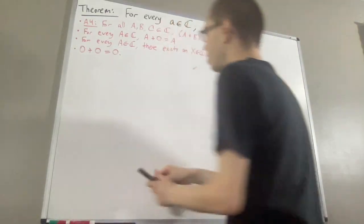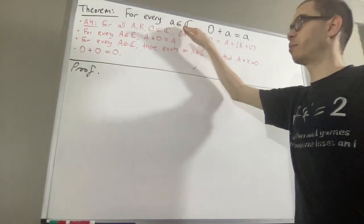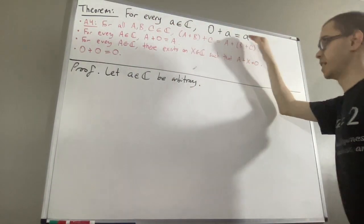Okay, so now let's get into proving this theorem. To start on the proof, let's give ourselves an arbitrary complex number a. From here, we're going to show that 0 plus a is equal to a.